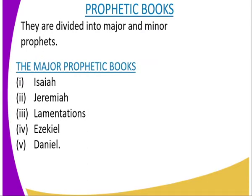Then we have the prophetic books. These prophetic books are divided into two groups: the major prophetic books and the minor prophetic books. Under the major prophetic books, we have Isaiah, Jeremiah, Lamentations, Ezekiel, and Daniel.